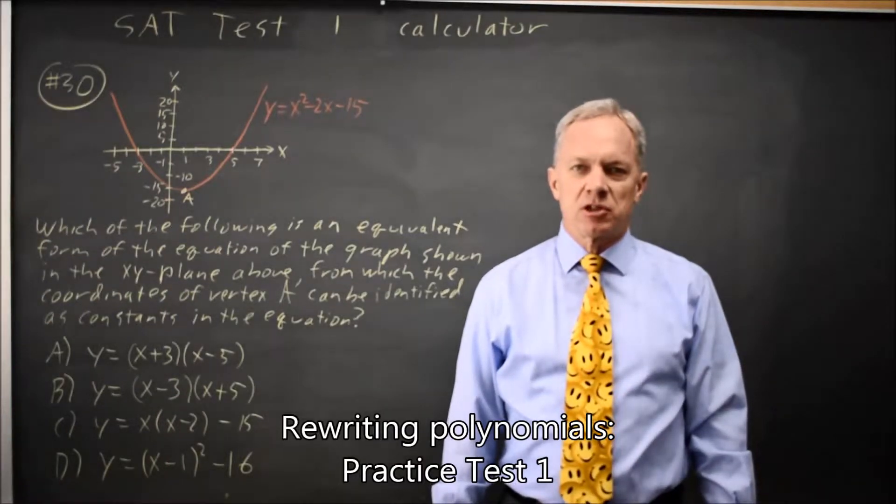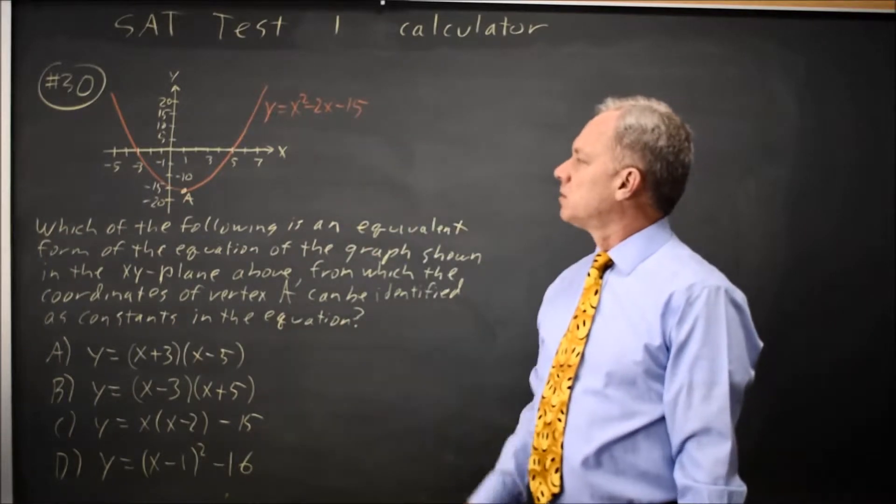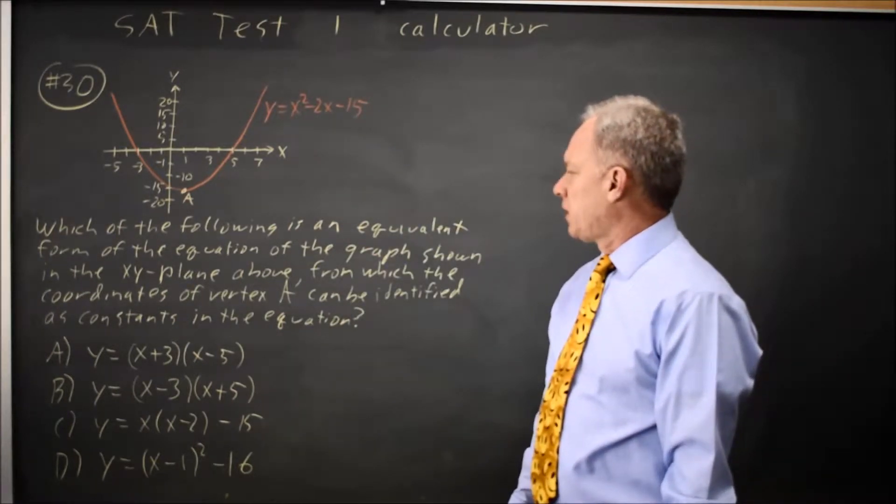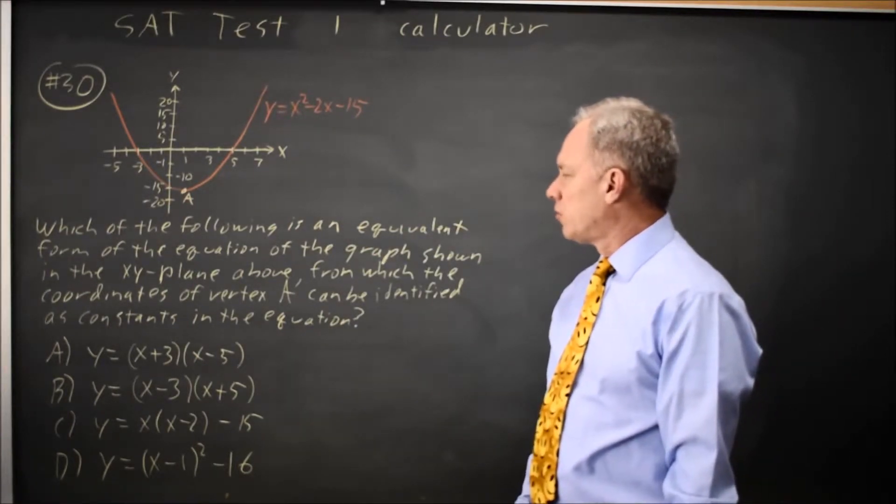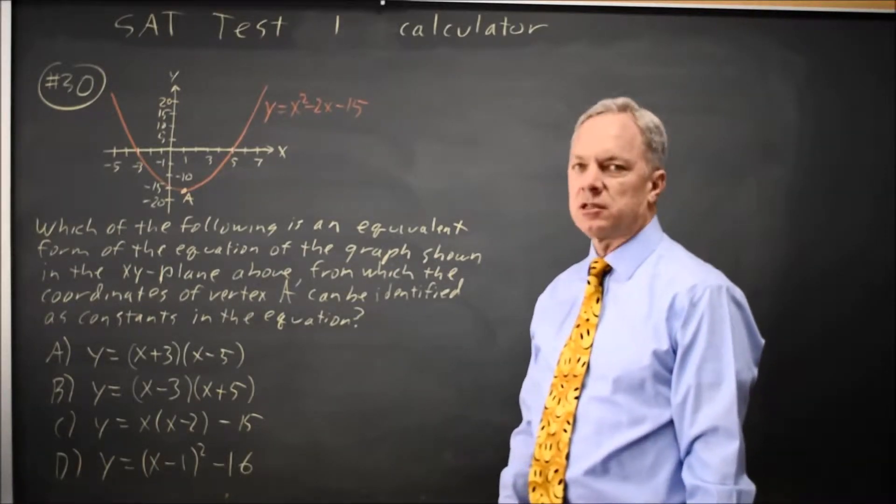This is calculator question number 30 from SAT practice test 1. College Board gives you the graph of a quadratic equation and asks which is an equivalent form from which the coordinates of the vertex can be identified as constants in the equation.